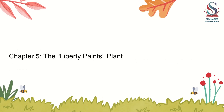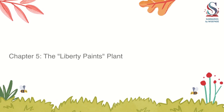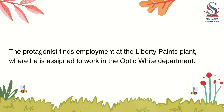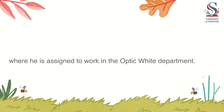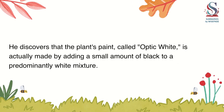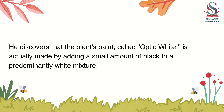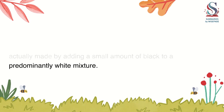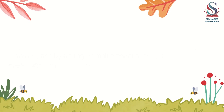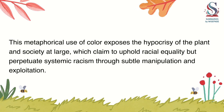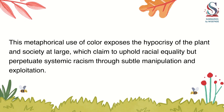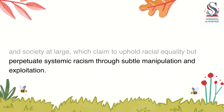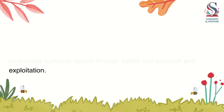Chapter 5: The Liberty Paints Plant. The protagonist finds employment at the Liberty Paints Plant, where he is assigned to work in the Optic White Department. He discovers that the plant's paint, called Optic White, is actually made by adding a small amount of black to a predominantly white mixture. This metaphorical use of color exposes the hypocrisy of the plant and society at large, which claim to uphold racial equality but perpetuate systemic racism through subtle manipulation and exploitation.